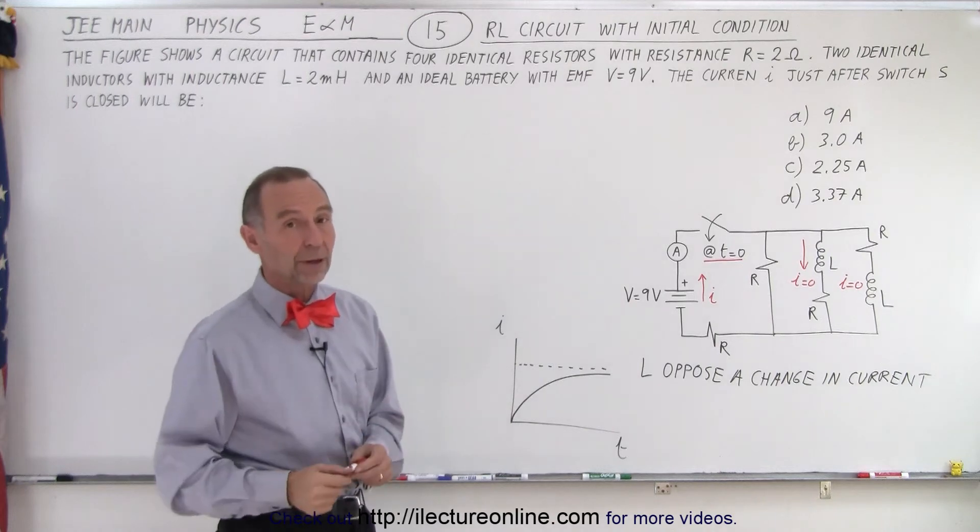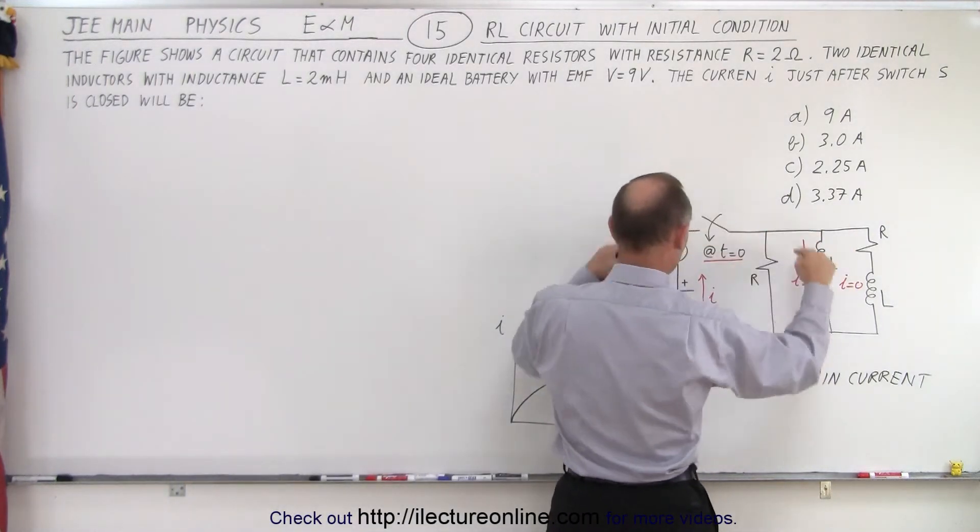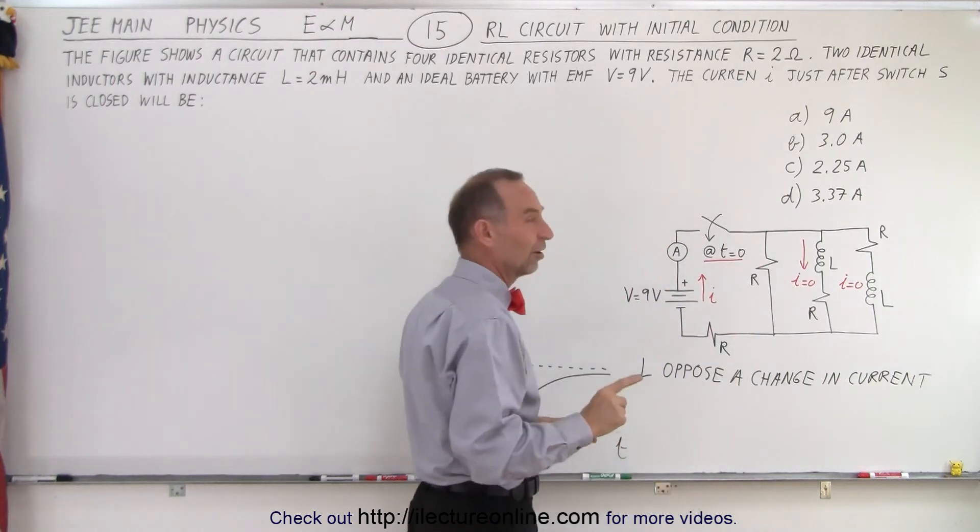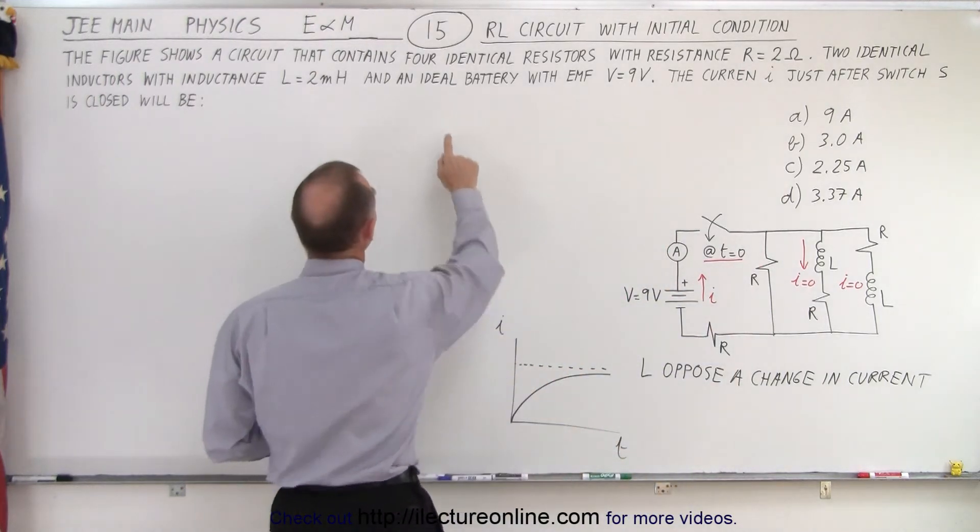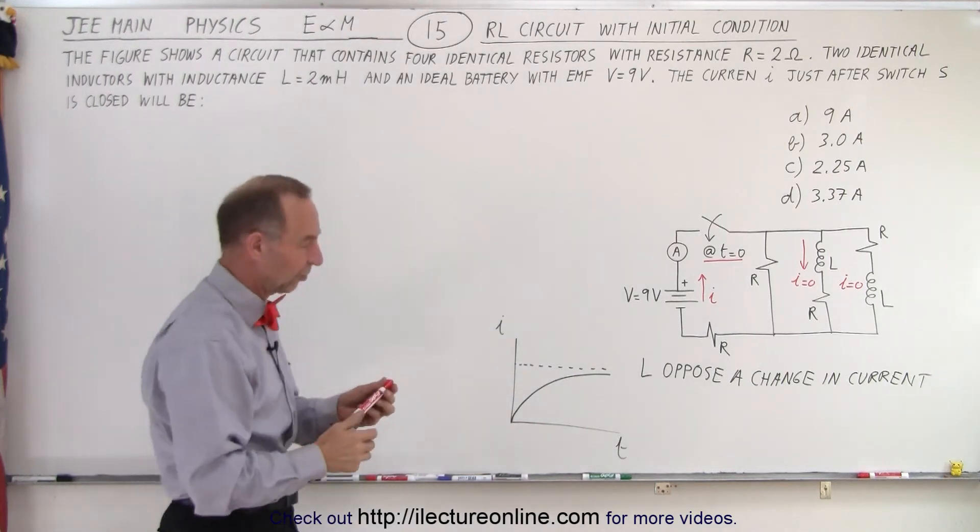Once you realize that, the problem becomes really easy, because then essentially, if you don't look at these two branches, you simply have a battery and two resistors. Notice that they state that it's an ideal battery. Ideal means that it does not have any internal resistance.